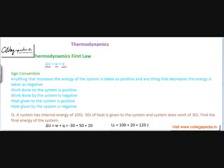Whatever energy the system has, we cannot calculate it exactly, but suppose it is U. Whatever work we do and whatever heat we give will change the internal energy by an amount equal to W plus Q. We don't know the initial energy, so we don't know the final energy either. But we know the change. If the change is 20 joules, it could be going from 100 to 120, or 90 to 110, or 130 to 150 — but we do know the change in internal energy, and fortunately in all mathematics we require only the change.